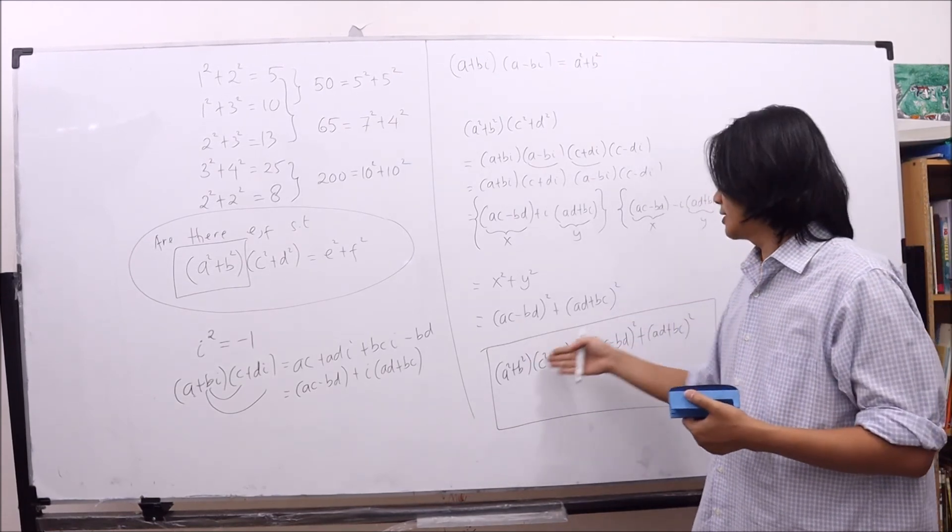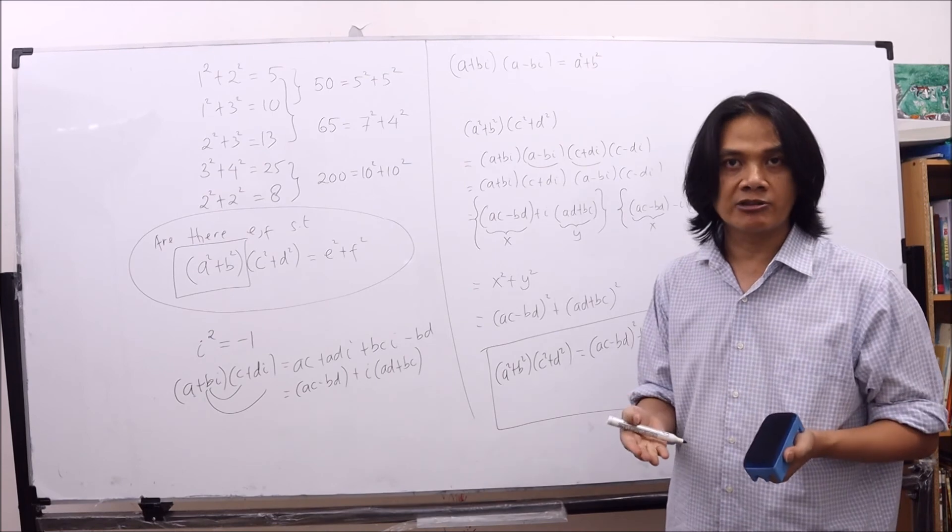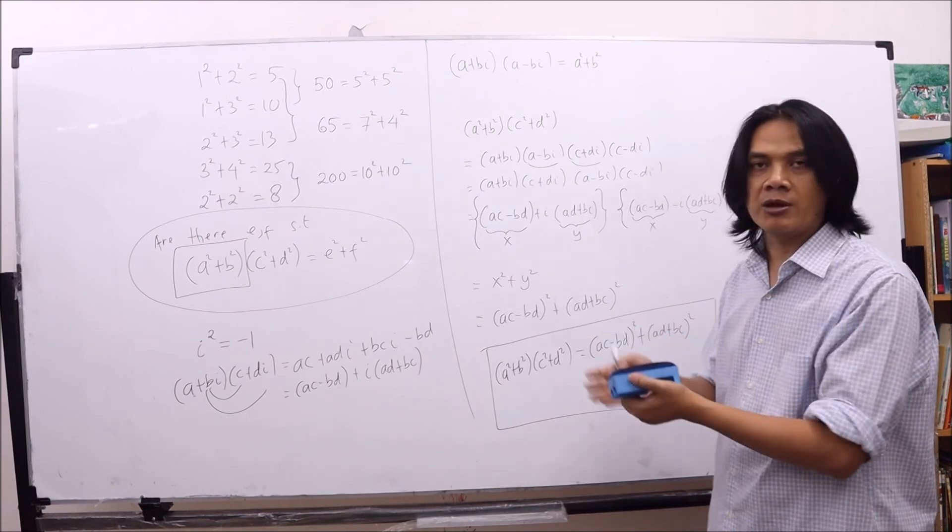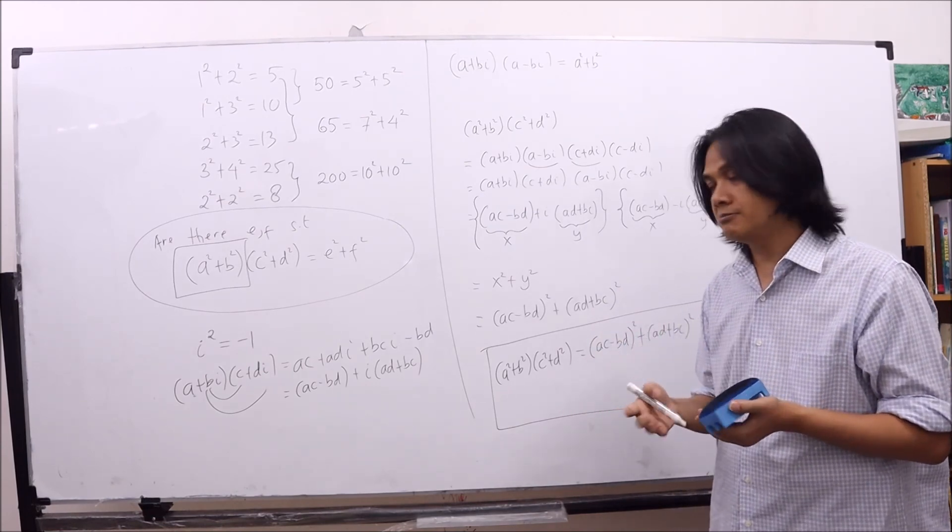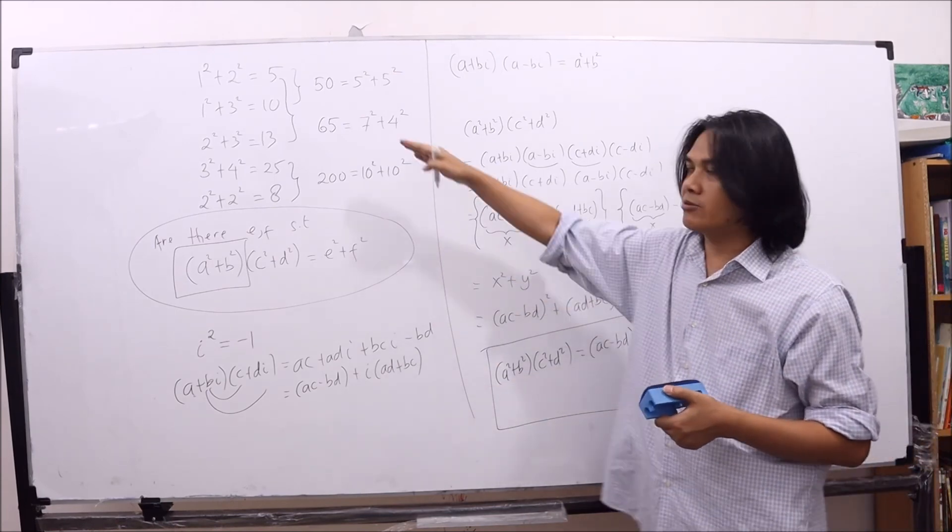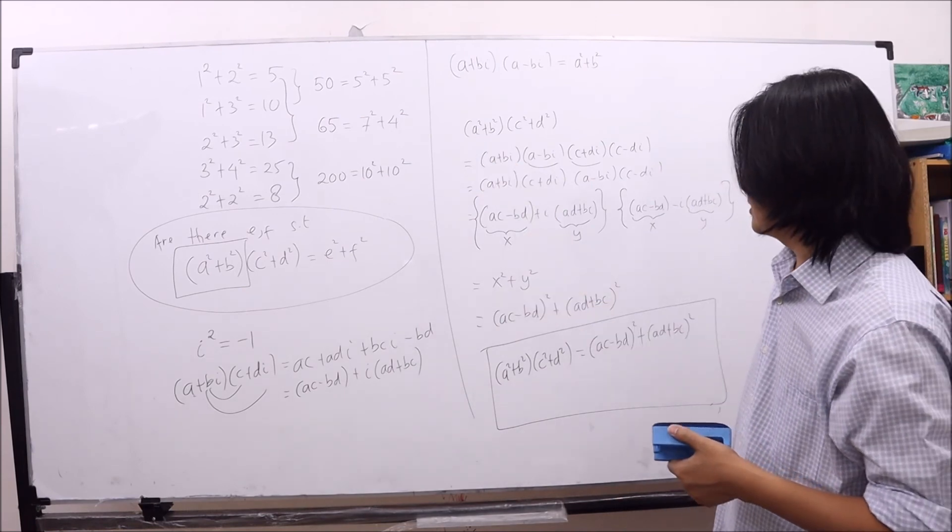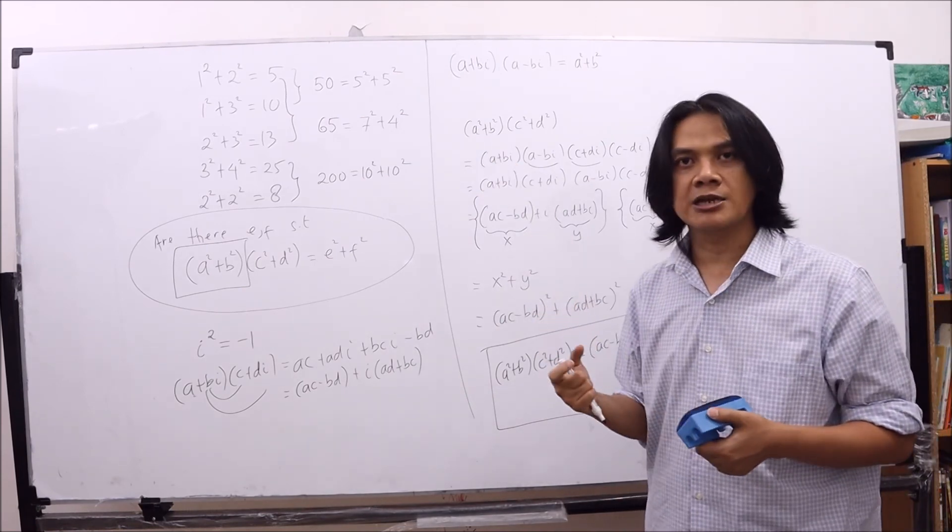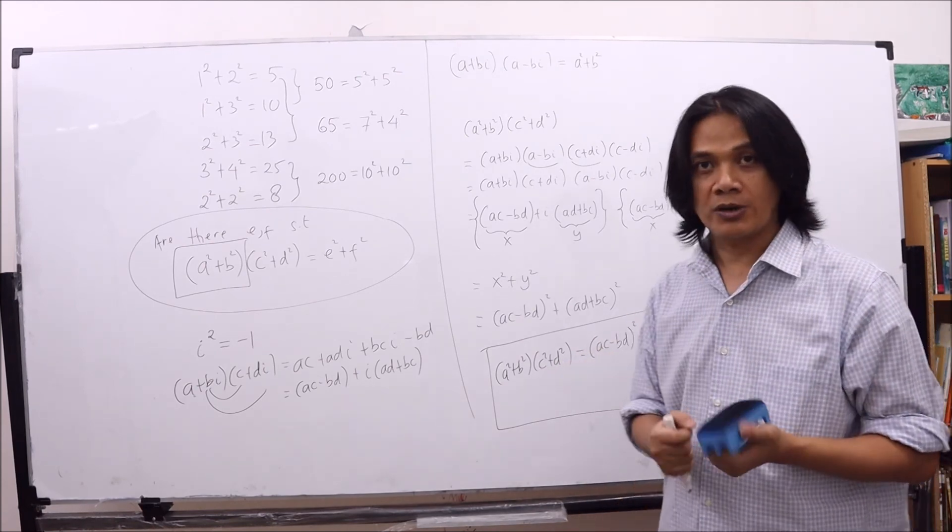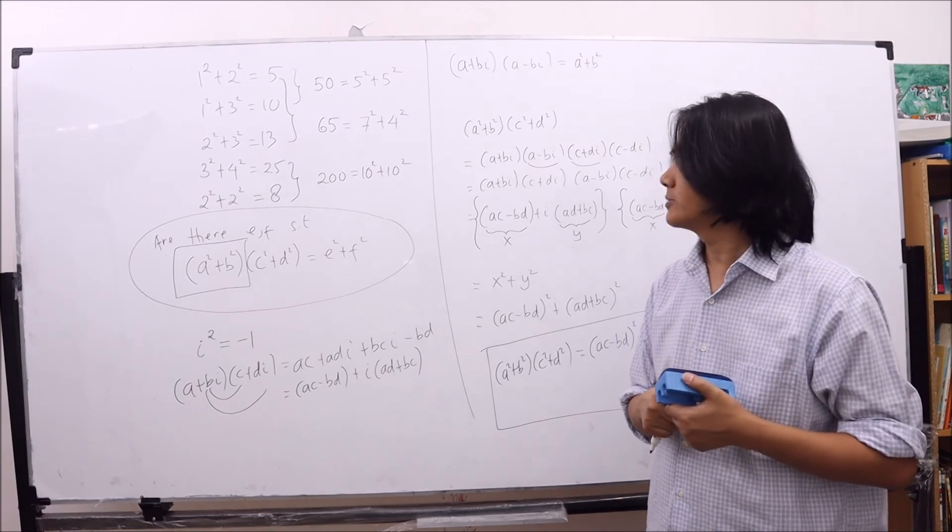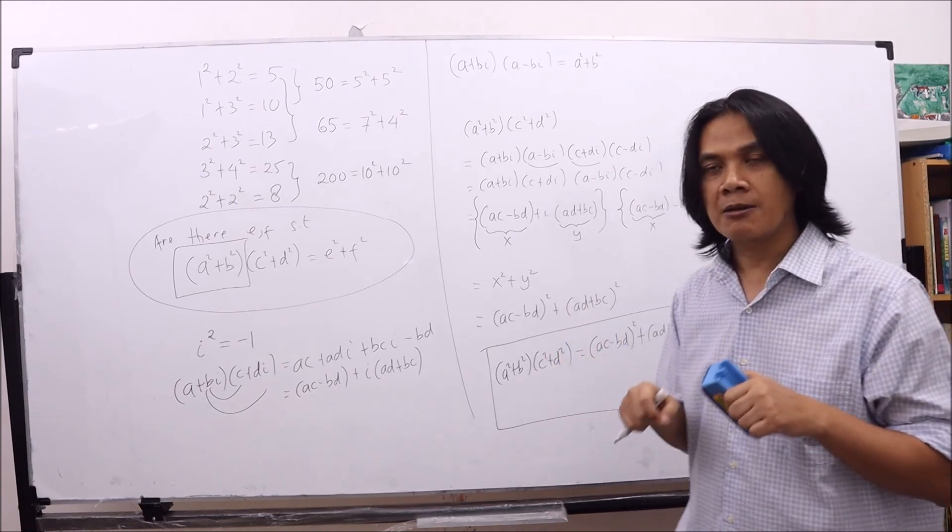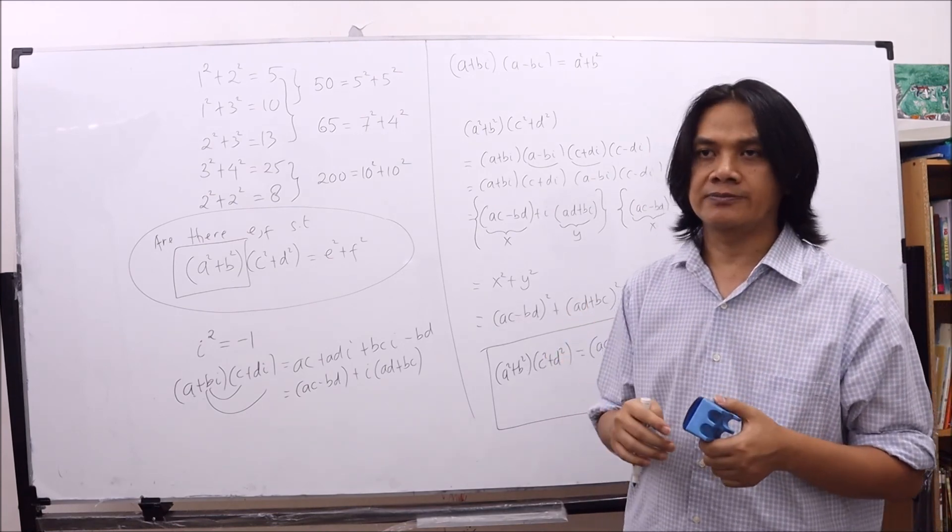Actually, when we've already written this identity, we can verify it directly by multiplying out everything on the left hand side and on the right hand side. And then we compare that the two are indeed the same. So since we have this identity, then our conjecture, which is that the product of two numbers that can be expressed as the sum of two squares, can also be written as the sum of two squares. So this observation is not a special observation, but something that's true in general.